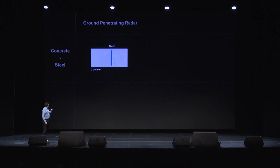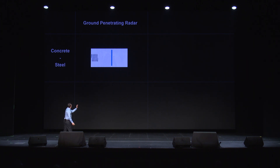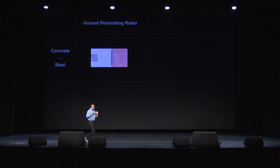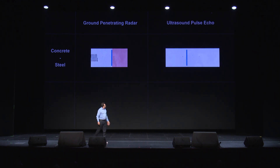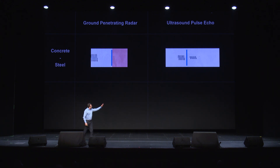In the case of concrete with steel: GPR waves will be fully reflected on steel — it's like a mirror, and we cannot see behind the mirror. How do we solve it? Ultrasonic pulse echo waves will travel through steel, and part of them will be reflected back.